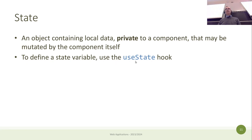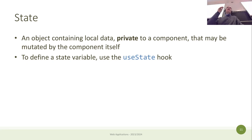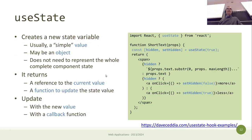To define a state variable we use the useState hook, which is just a function defined within the React library that we import. We call it within the component code. The state is simply a JavaScript value or object that contains local data, private to the component, and can only be changed by the component itself. Each state is associated with and bound to a specific component.